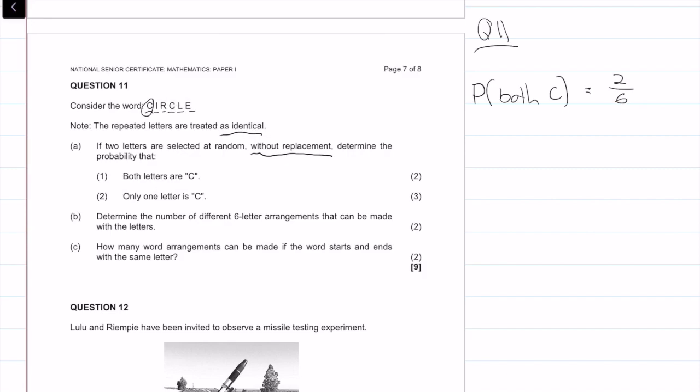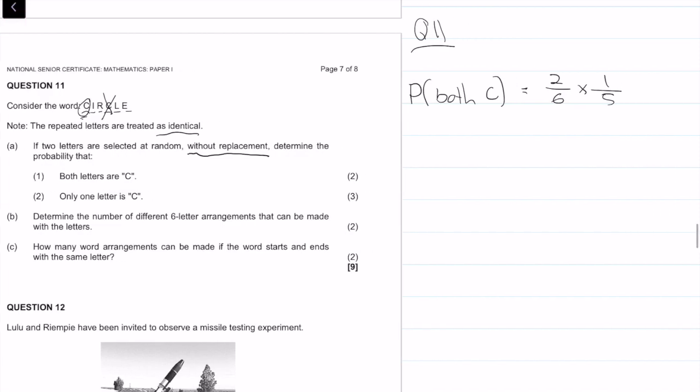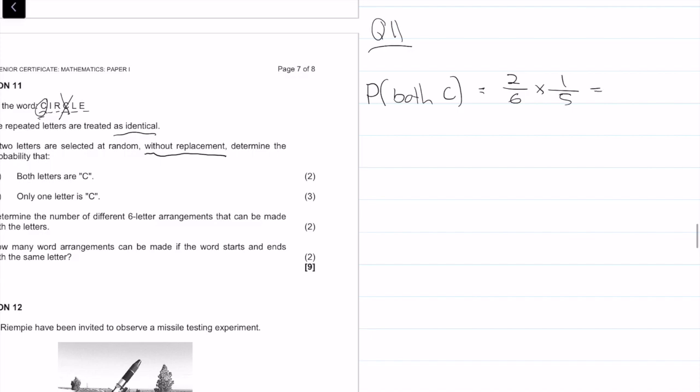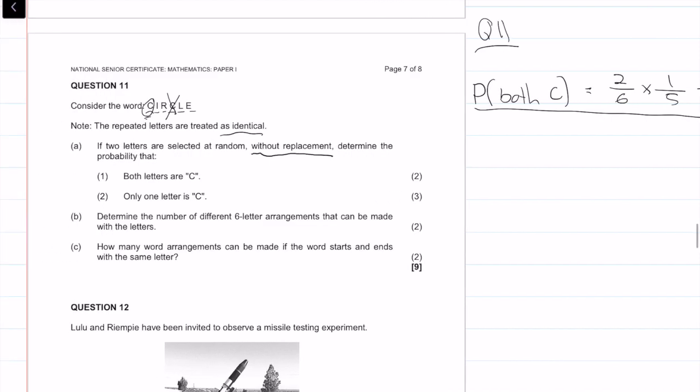So then let's say we pick out the C. Now this letter is gone because we're not replacing it. So now we only have five options and we only have one C left. So we multiply that by one over five. And if we multiply that out we get the answer as one over 15. So the probability of getting both C's is one over 15. And that was question A1.